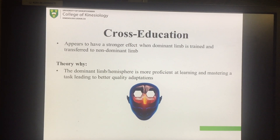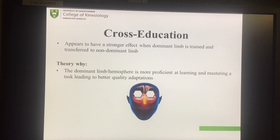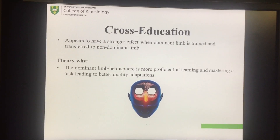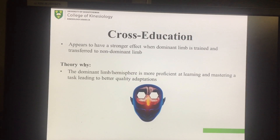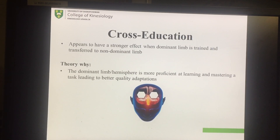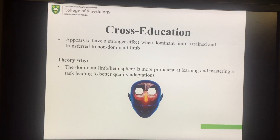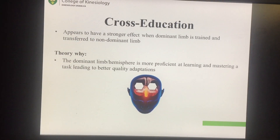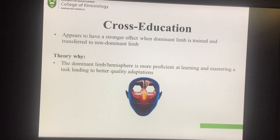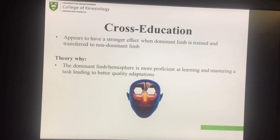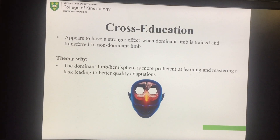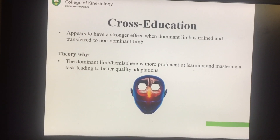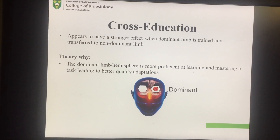To summarize, it appears that the cross-education effect is stronger when the dominant limb is trained and the effect transfers to the non-dominant limb, versus the other way around. One theory is that the dominant limb or dominant hemisphere is more proficient at learning and mastering a task, leading to better quality adaptations.